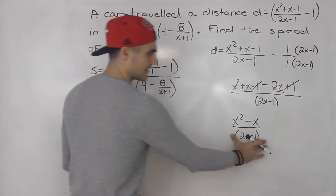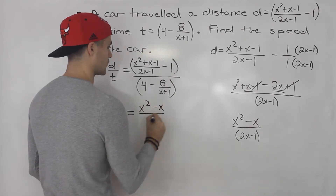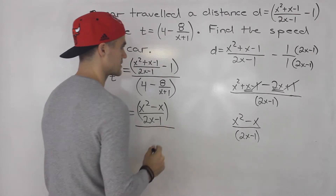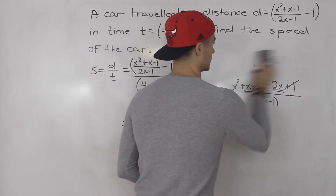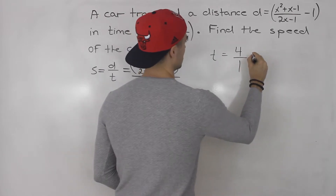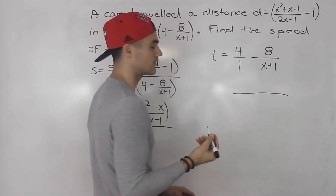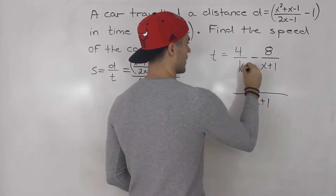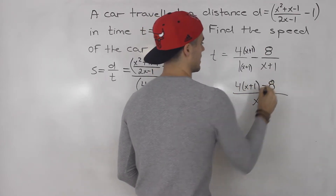So x squared minus x over 2x minus 1 is the simplified distance. Now we need to simplify the time expression. The time is given as 4 minus 8 over x plus 1. Let's write 4 as 4 over 1, minus 8 over x plus 1. The common denominator is 1 times x plus 1, which is just x plus 1. We multiply the top of the first term by x plus 1, giving 4 bracket x plus 1 minus 8.